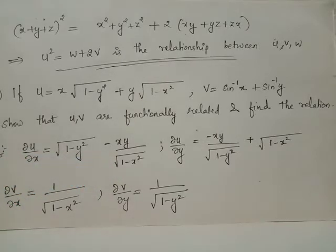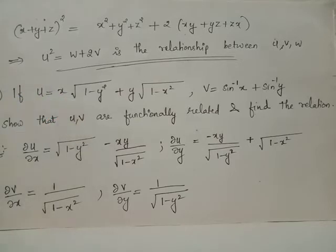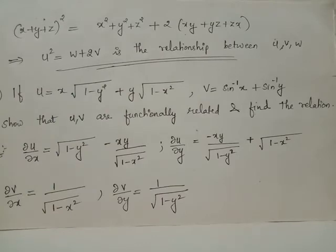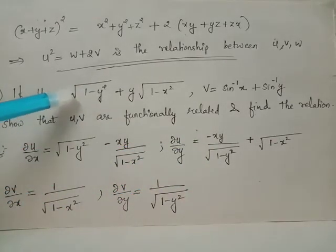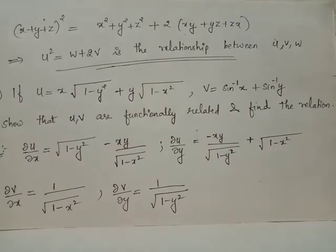Similarly, ∂u/∂y is evaluated treating x as a constant, giving negative xy over root of 1 minus y squared plus root of 1 minus x squared. This is because the derivative of root of 1 minus y squared with respect to y gives negative y in the numerator, with the 2s cancelling to yield negative xy over root of 1 minus y squared for that term.